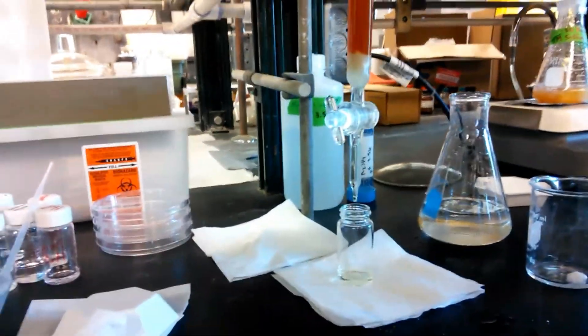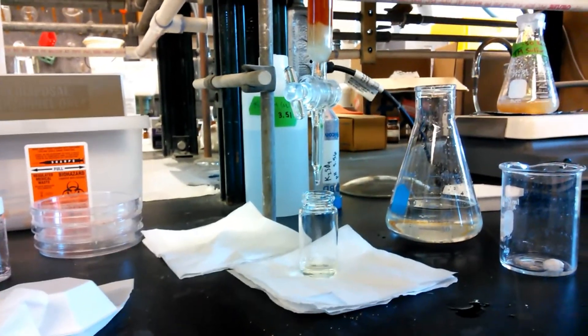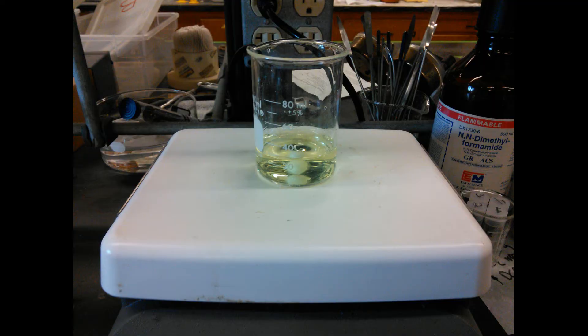The tungstate solution is slowly passed through the column and the bright yellow product is collected. Water is added to the bright yellow transparent solution and this is stirred overnight.